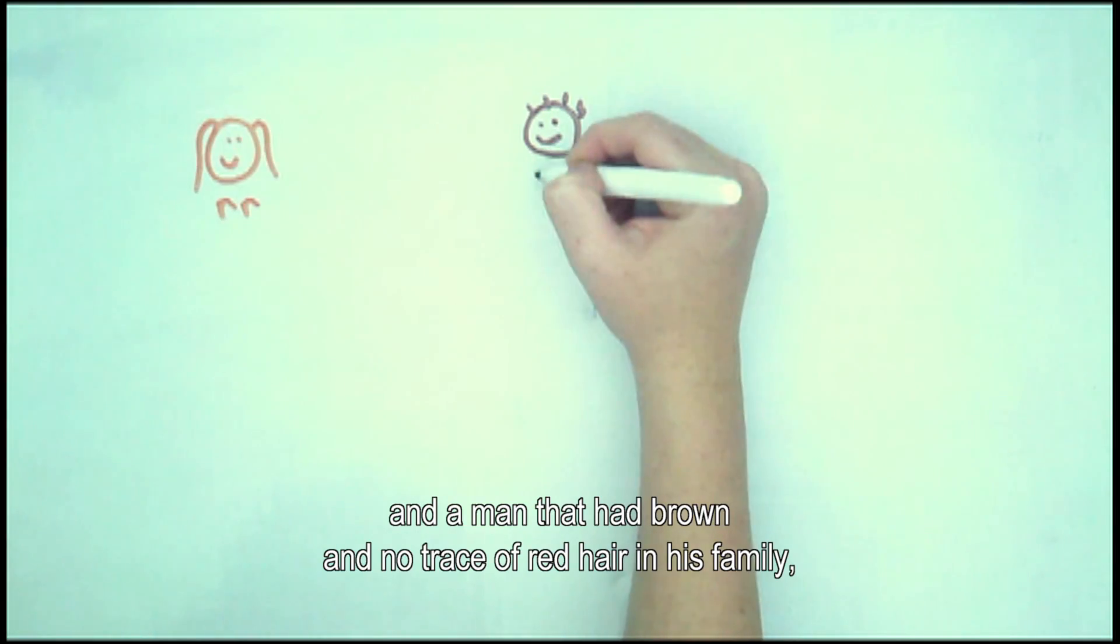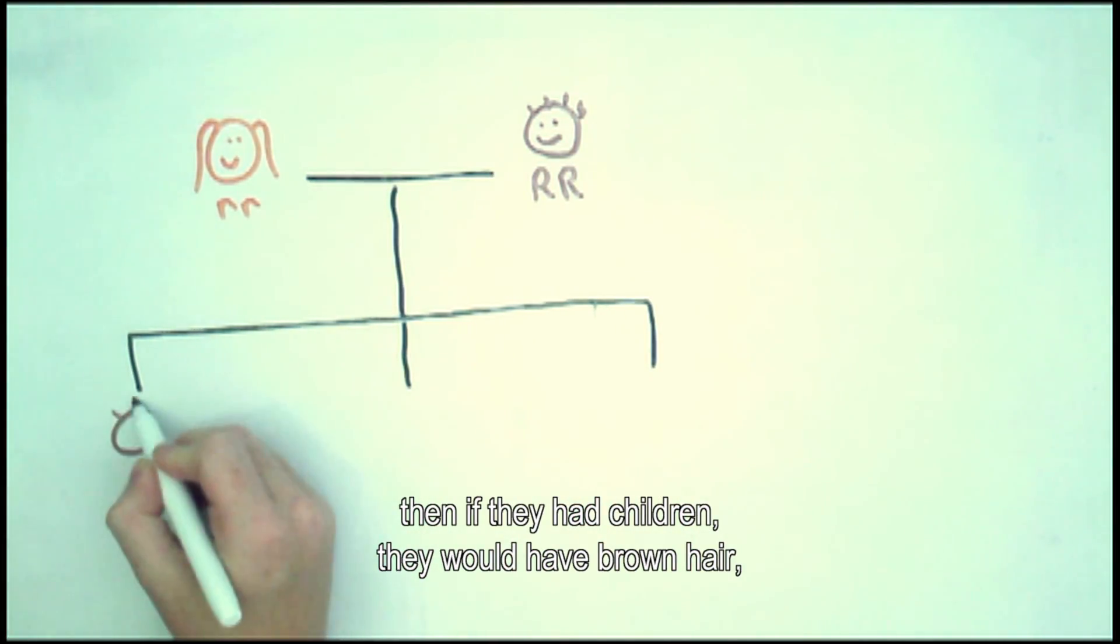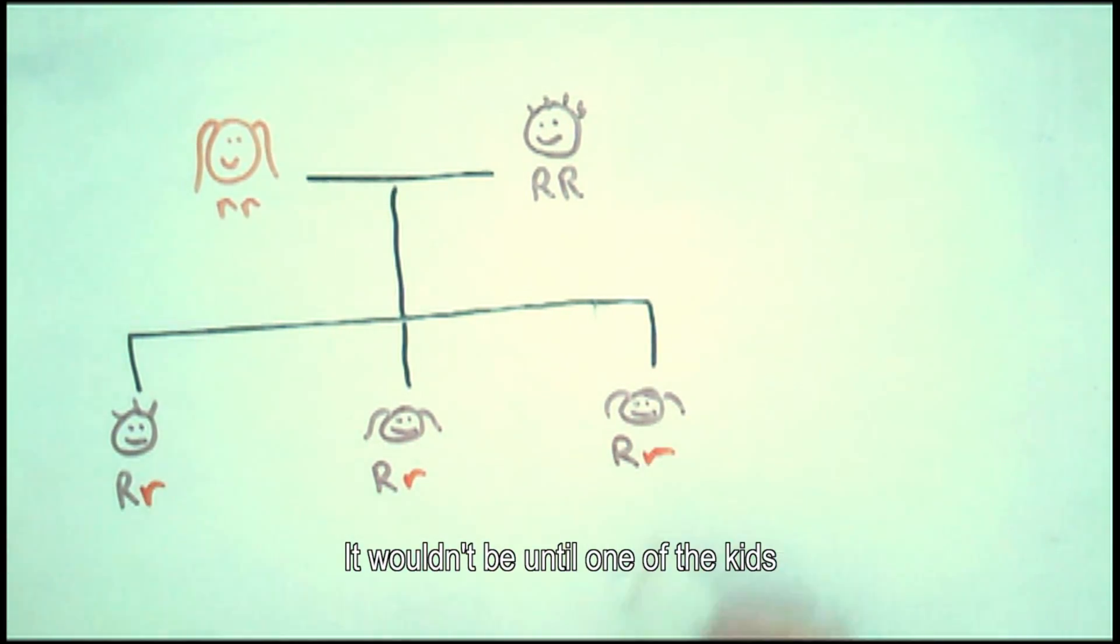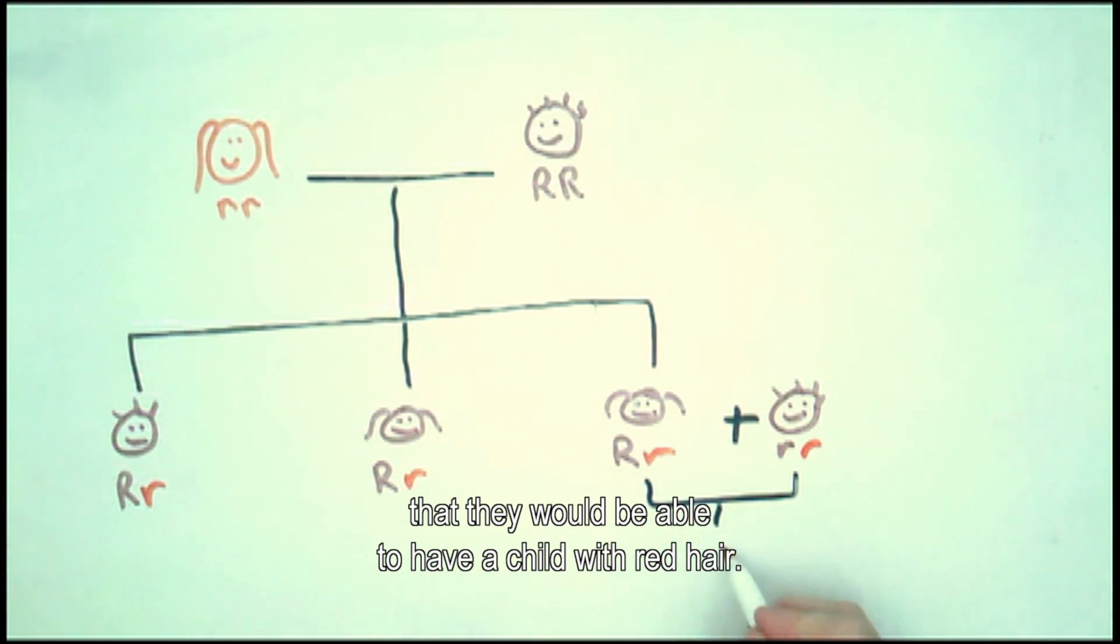Say there was a woman that had red hair and a man that had brown and no trace of red hair in his family. Then if they had children, they would have brown hair, but they would have the red recessive gene still. It wouldn't be until one of the kids met someone with either red hair or the recessive gene that they would be able to have a child with red hair.